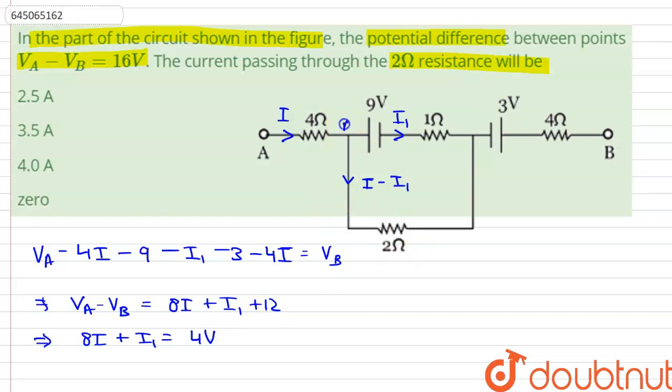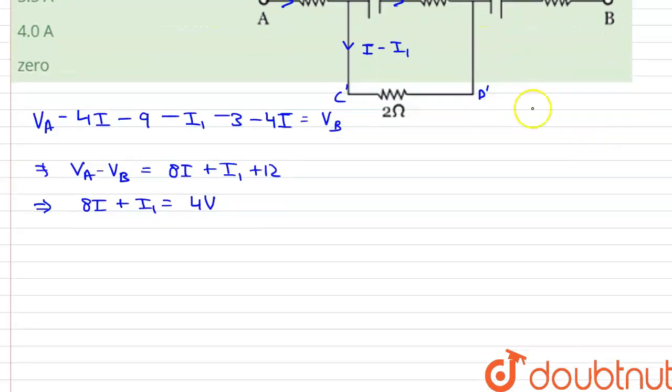Now, let us assume that this is A dash and this is B dash. This is C dash and this is D dash. Thus, if we apply KVL in A dash, B dash, C dash and D dash, we can write that minus 9 minus I1 plus 2 times I minus I1 is equals to 0.